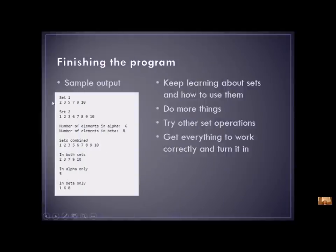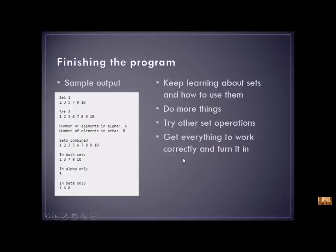Your output should look something like this — you've got your first two sets and then all your results. It should be different every time you run it because you're getting random numbers. This is going to be the minimum — get this much to work. If you have time, keep learning about sets and try doing more things. There are other set operations you might want to work in, like generating a random number and seeing if it's in the set. There are some things you can do with sets that you cannot do in CodeSculptor, so you can read about it in the text. CodeSculptor is kind of a subset of Python and not all the methods and functions work there — they all work in IDLE but not all in CodeSculptor. Get your program to work correctly, make sure you have your header, and then you're ready to turn it in. Have fun learning about sets.